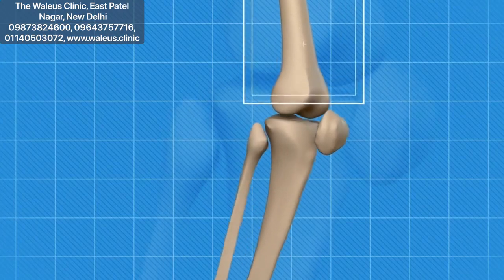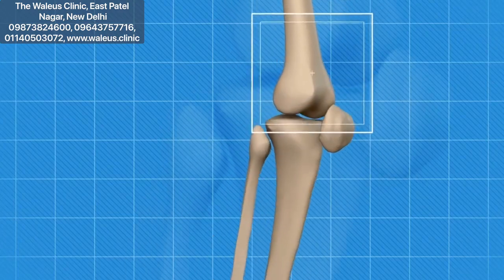There is another component called the synovial fluid, or the joint fluid, which is viscous and acts like a lubricating fluid for the movement of the knee joint. Now why does osteoarthritis develop? Usually it is because of advancing age that the quality of the synovial fluid and the quality of the cartilage starts becoming poor.